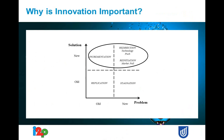Why is innovation important? There are several ways of looking at this. Some are more relevant to organizations and businesses; others matter to whole countries, which is why governments around the world are interested in innovation — not just companies. One explanation is shown in a diagram with two axes: the horizontal axis represents problems, which can be old or new, and the vertical axis represents solutions, also old or new.